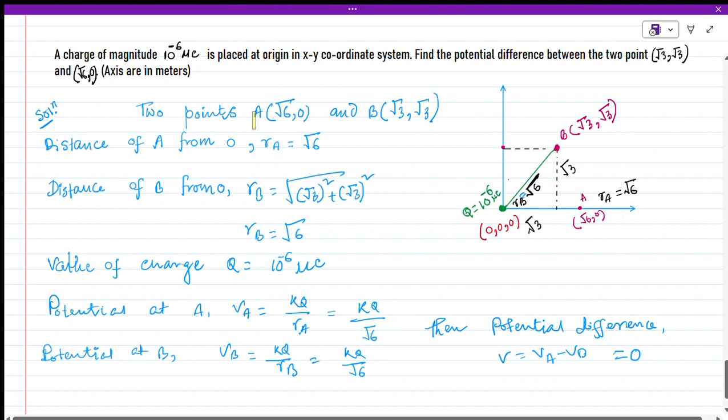Let's suppose two points A and B, where A is (√6, 0) and B is (√3, √3). Distance of A from the origin will be rA = √6 because this is only given by the x-axis.